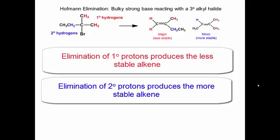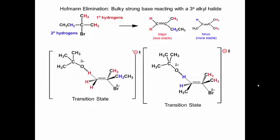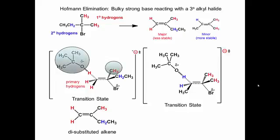Let's look at the transition states. First, look at the transition state that produces the less stable alkene. The bulky base is abstracting a primary proton. There is steric interaction between the incoming tert-butoxide ion and the groups attached to the tertiary carbon of the alkyl halide.